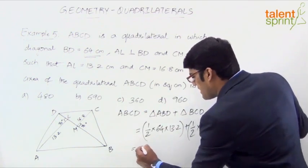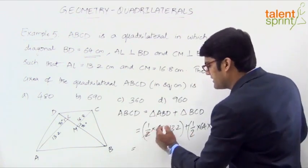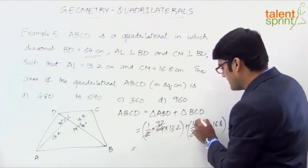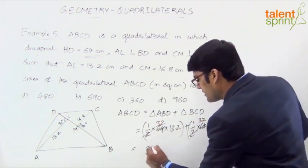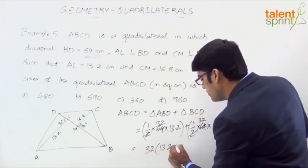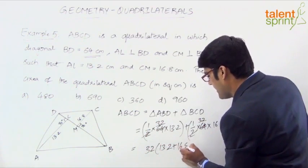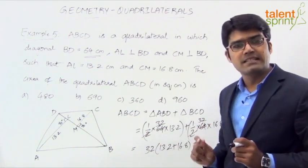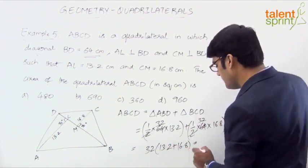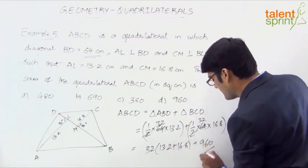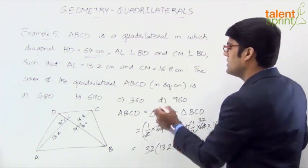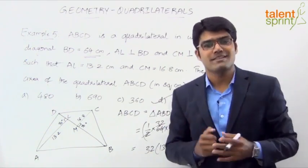So if you take half and 64 common here, this is 32 and this here is 32. So if you take 32 common what are we left with? 13.2 plus 16.8. Now 13.2 and 16.8 is 30. 32 into 30 will be 960. So the answer for this question has to be option D, 960 square centimeters.